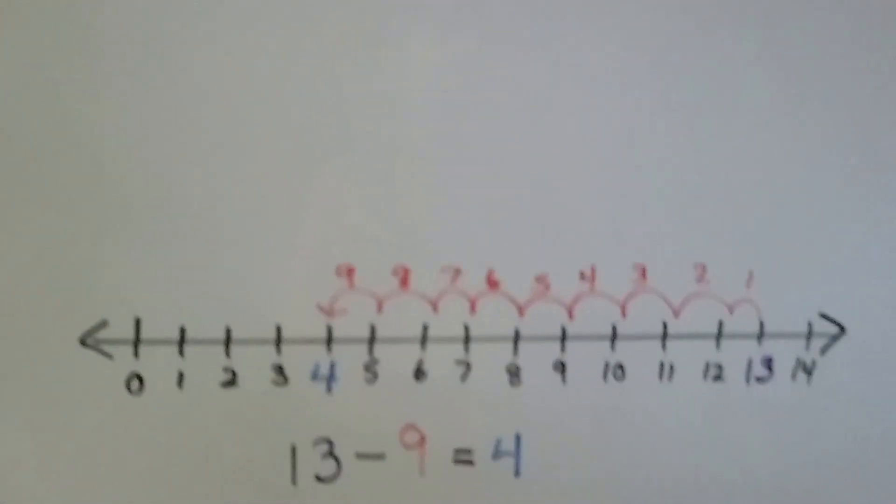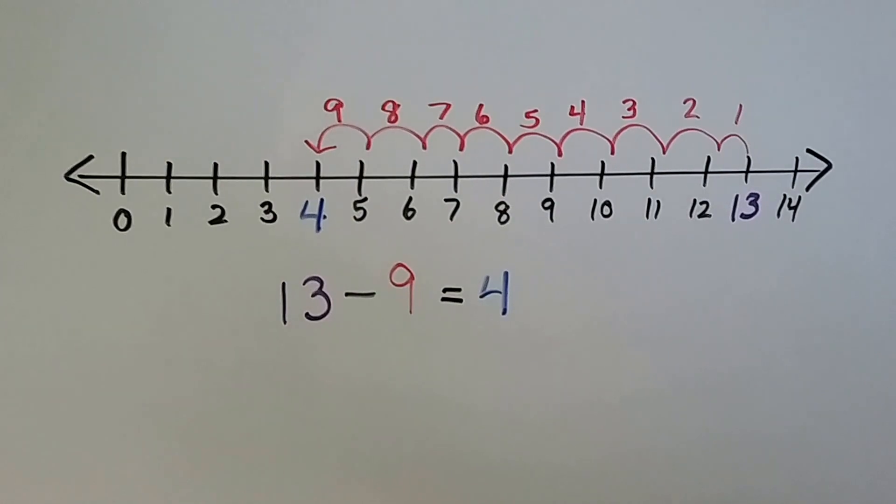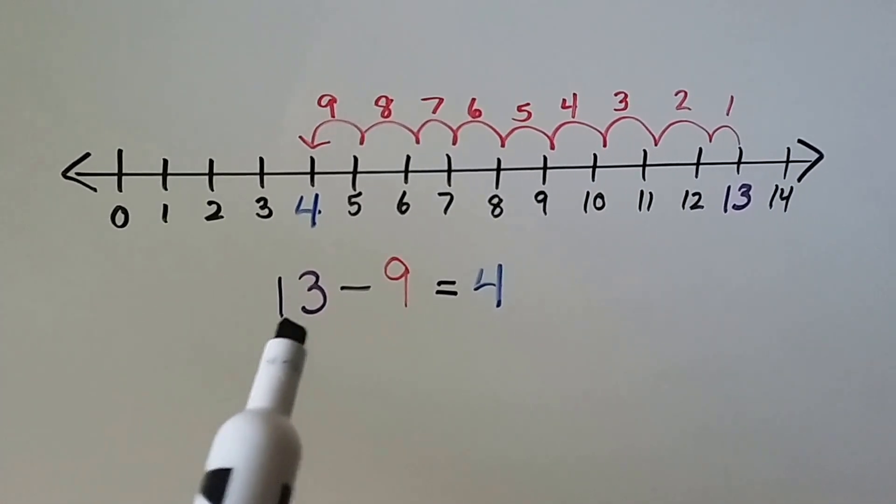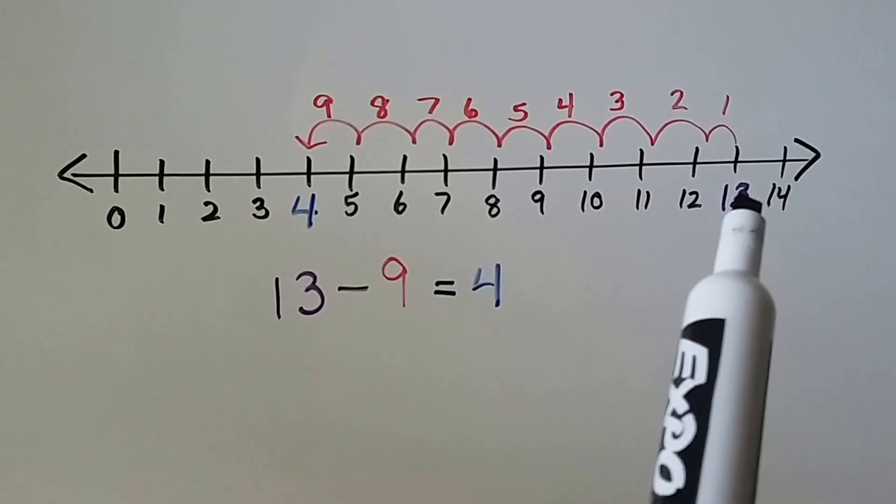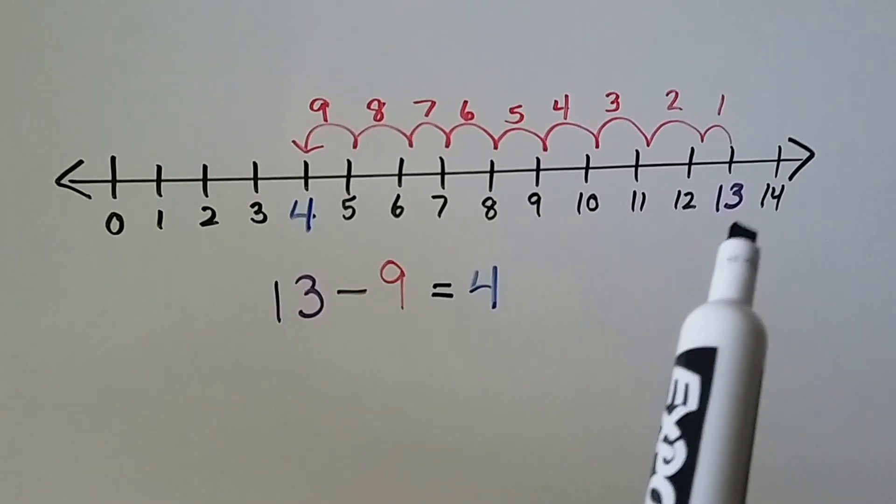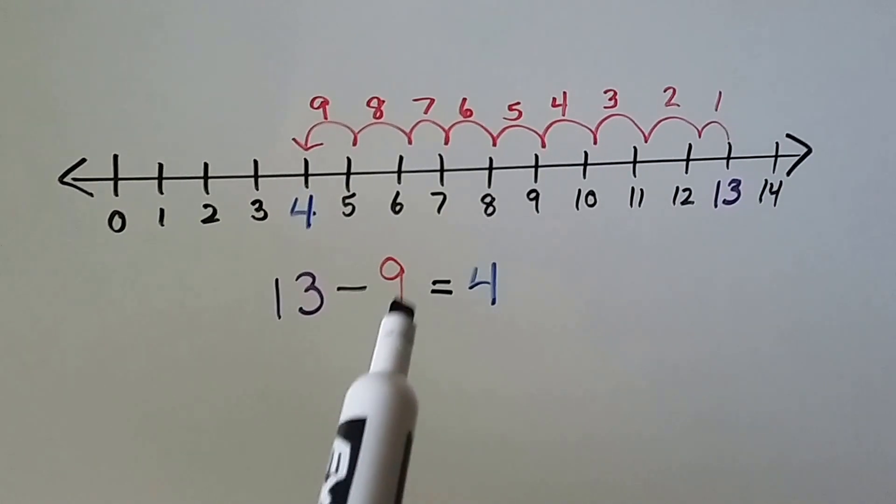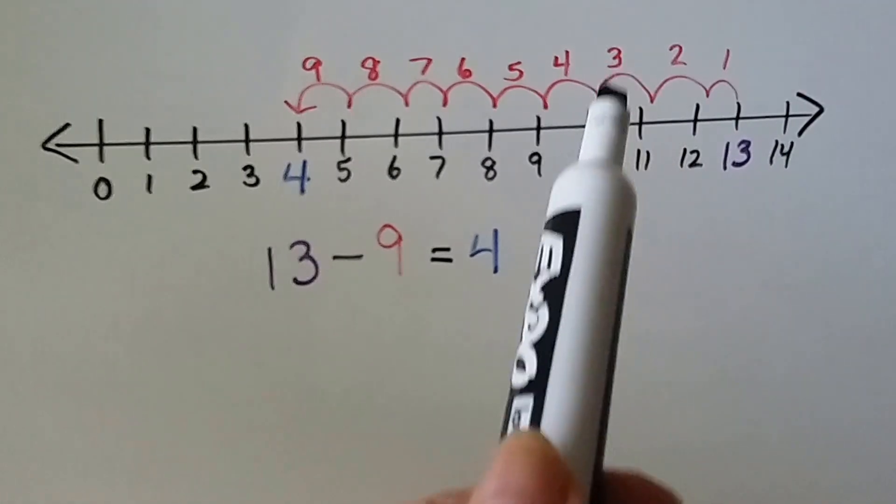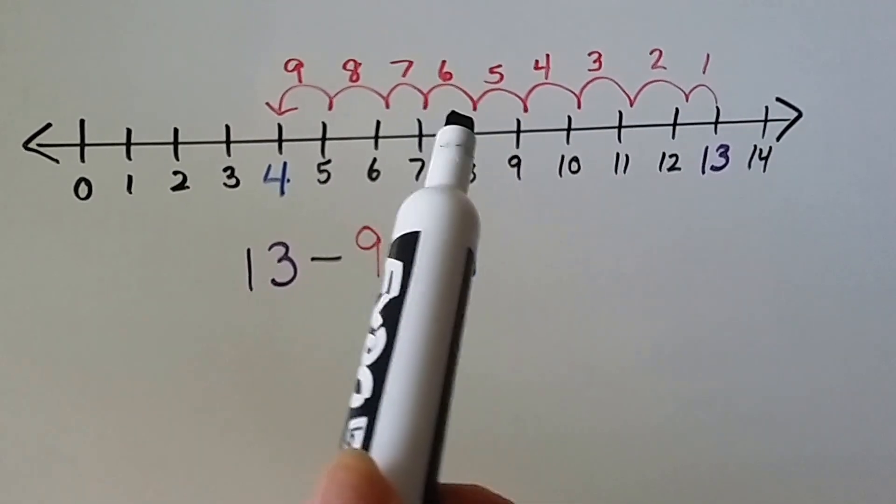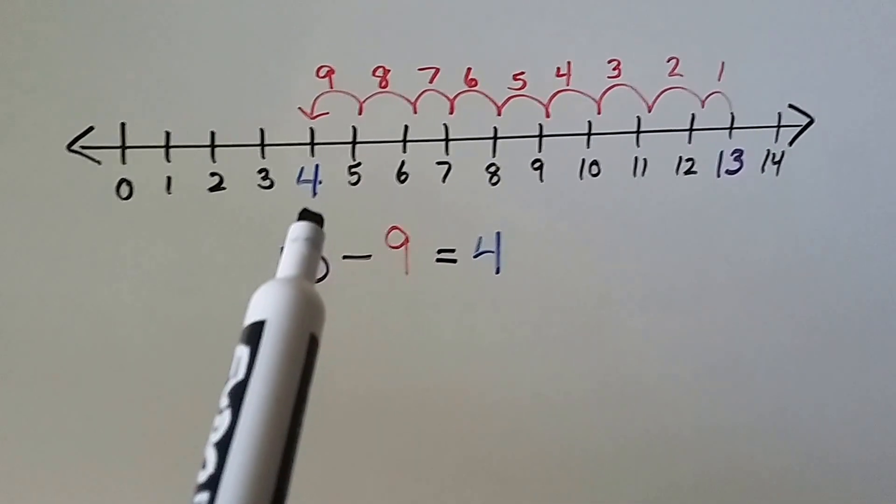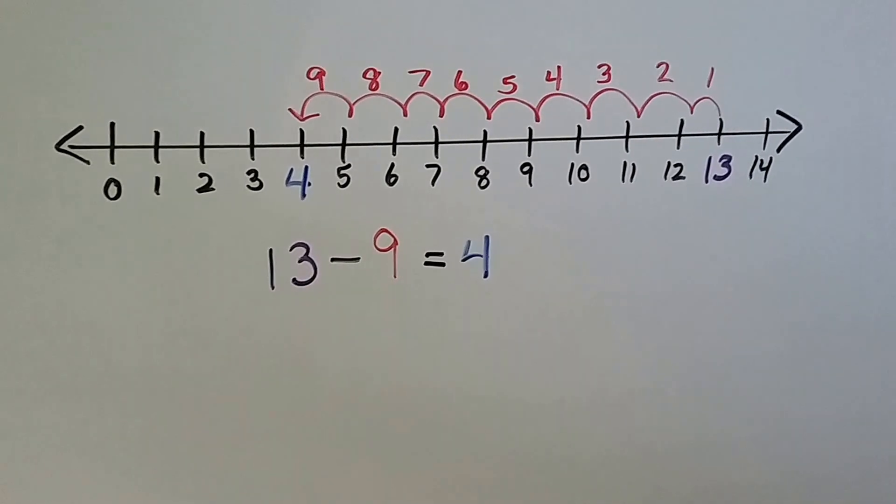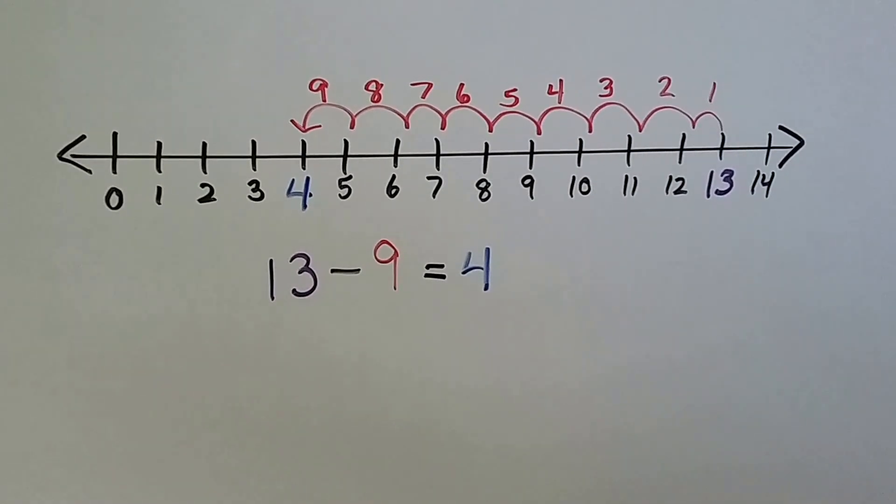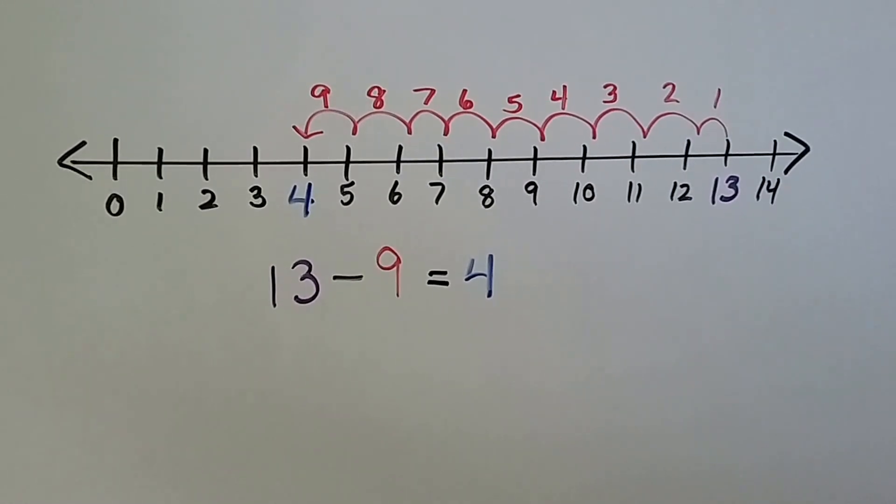Let's try one last one. We have 13 minus 9. 13 is our minuend. We start here on the number line with the minuend 13. We're going to hop back 9 times. 9 is our subtrahend. We go 1, 2, 3, 4, 5, 6, 7, 8, 9 hops. That brings us to the 4, so our difference is 4. You can use a number line to help you do subtraction sentences to find differences.